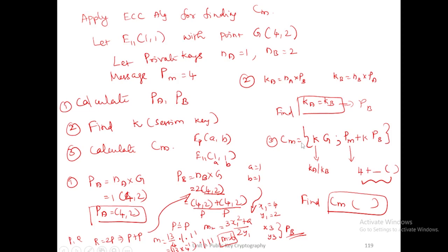For ciphertext calculation, cm = (k * g, pm + k * pb). Your k value is either pa or pb value. g is the given point (4,2). This is the normal operations. pm is 4 plus your k value and pb value. pb is a point, k is also some point value. In this way, we should do the ciphertext notation. You only write the points here. This is the cm value. In this way, we are able to apply ECC algorithm for finding the ciphertext calculations.